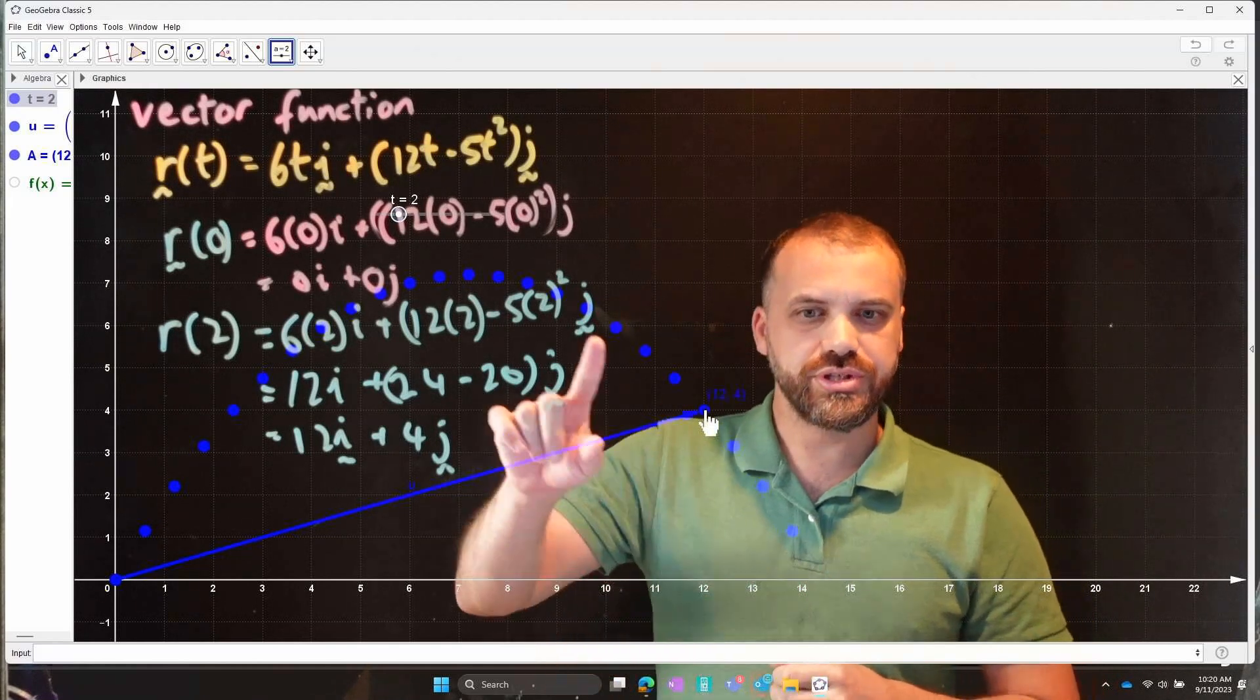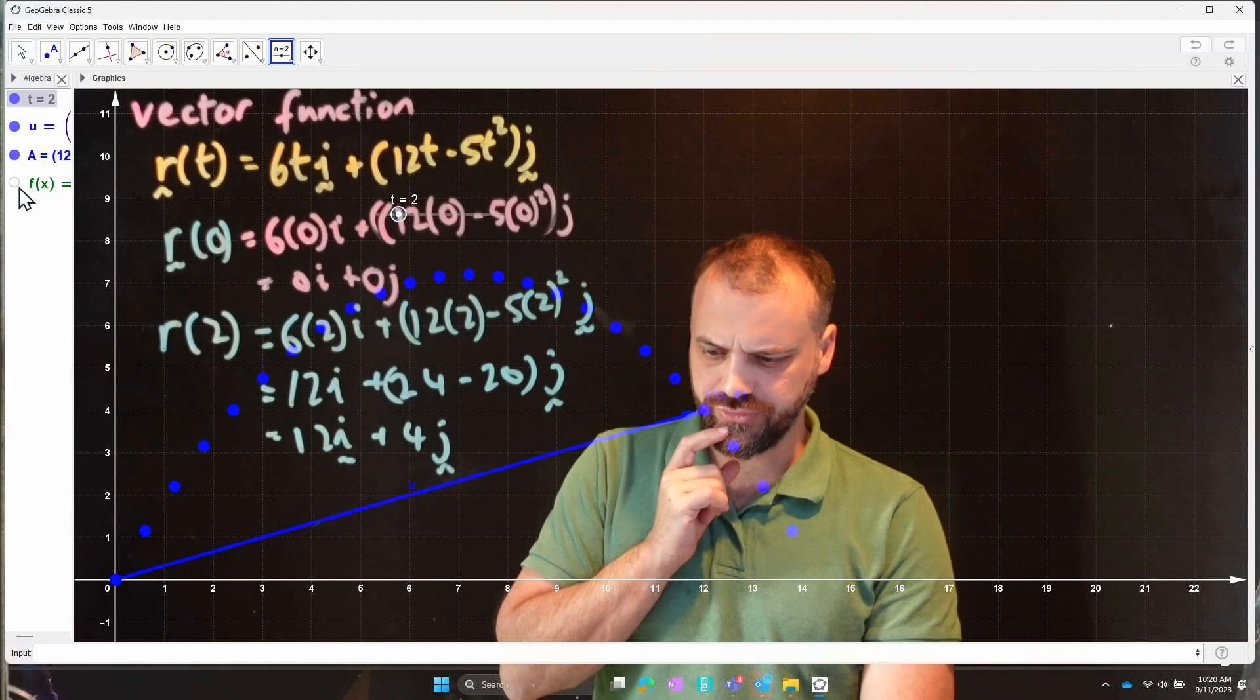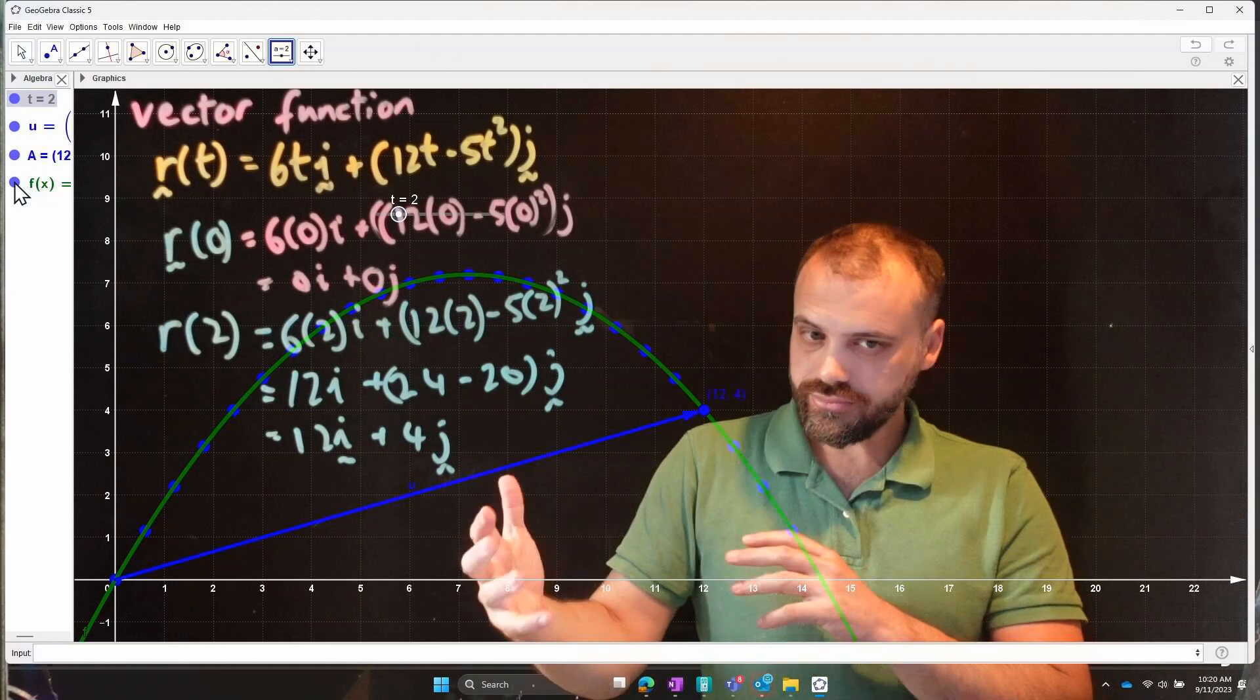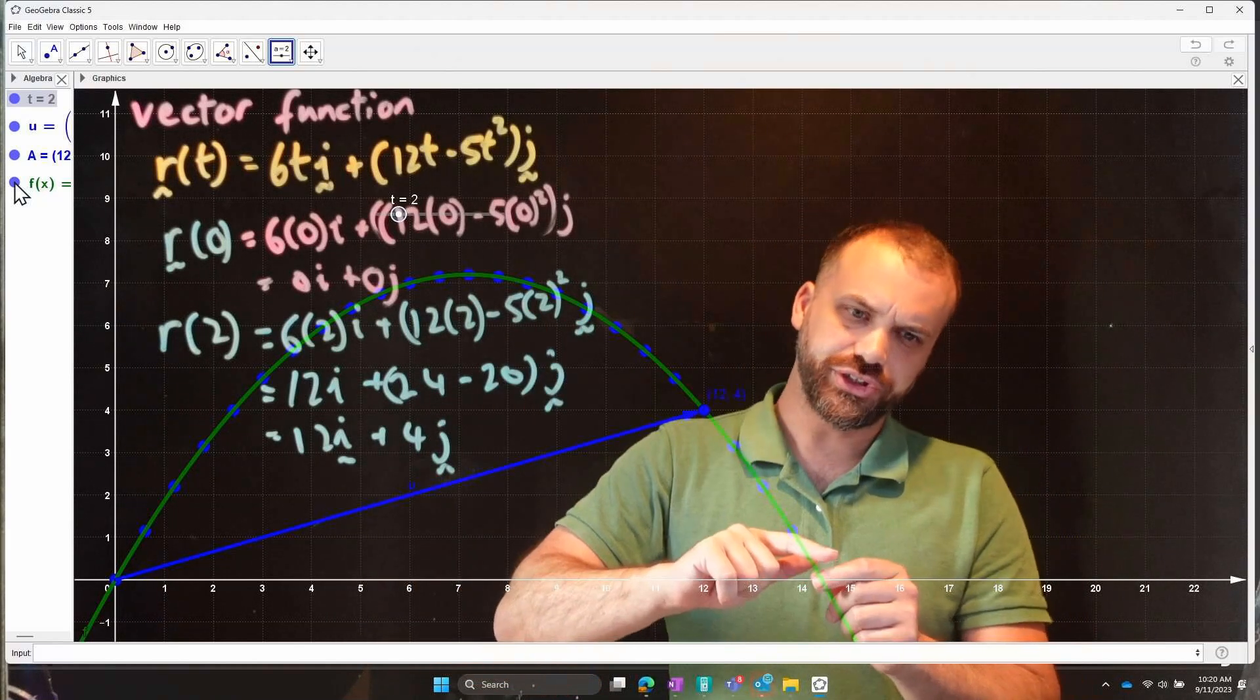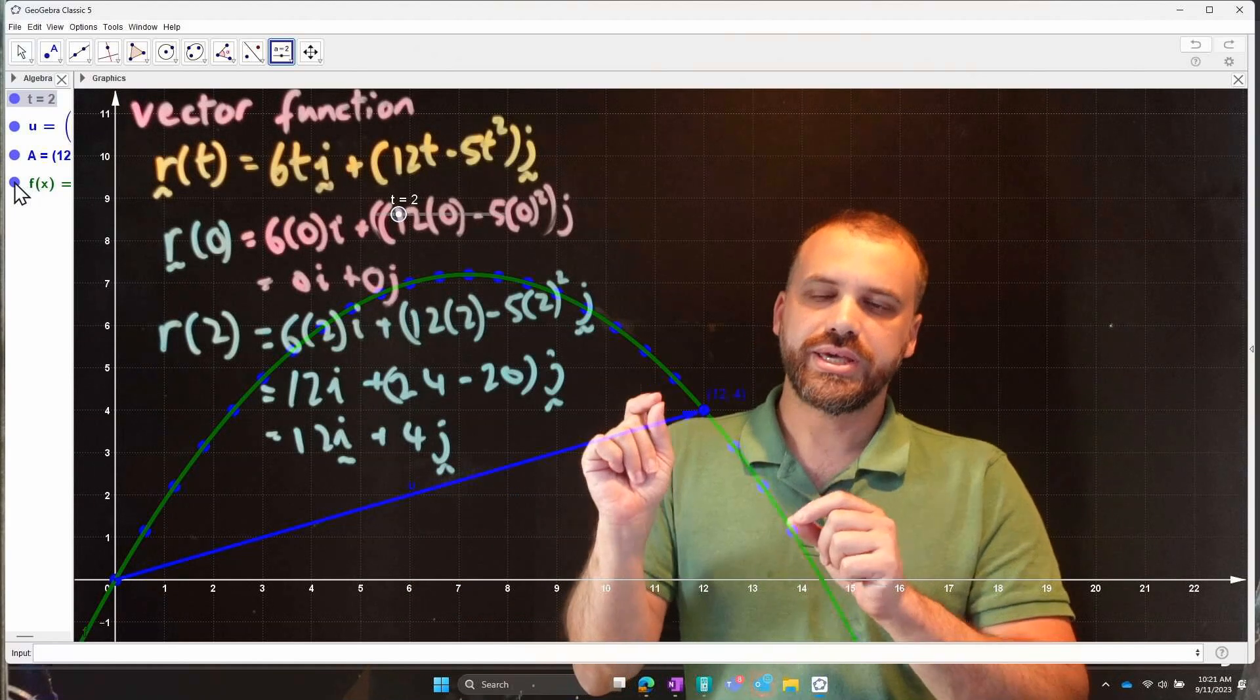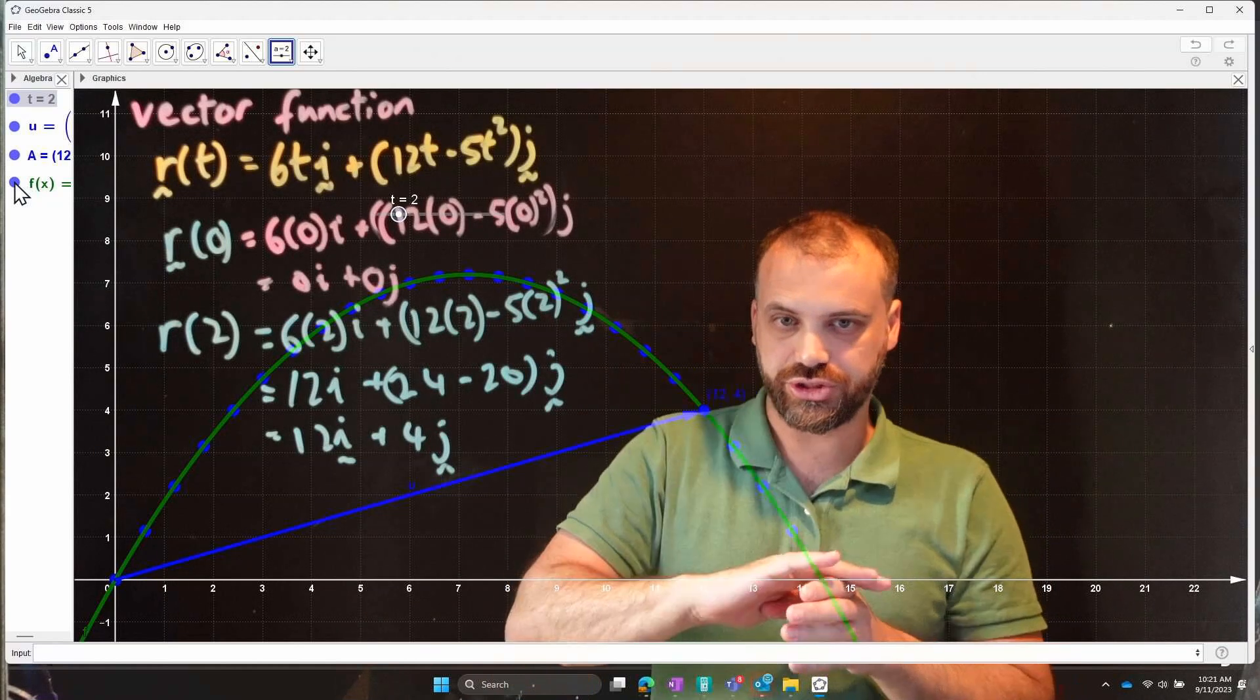Now, I didn't choose this vector function by accident. Look at the original function we had. This was our parabola, our h of x function, our height function. This function and my vector function, they follow, they match up perfectly. We can actually take a vector function and convert it to a Cartesian function.